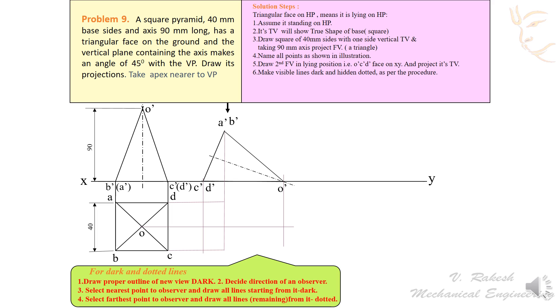In this first front view, A dash B dash is nearer to observer. C dash D dash and O dash, these three points are away to observer. The C dash O dash is away to observe, so this indicates dotted line. Next D dash O dash is also away to observe. This line also that dotted line.